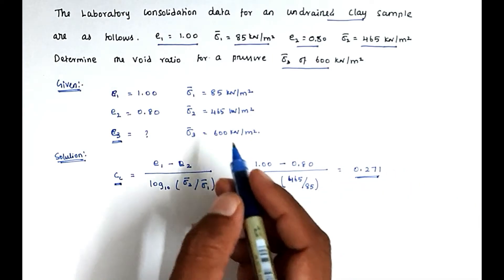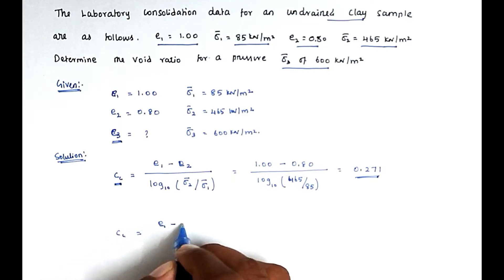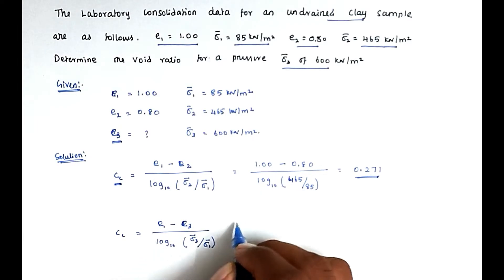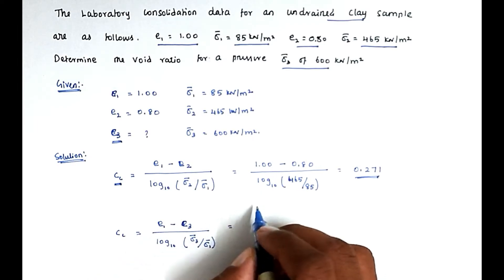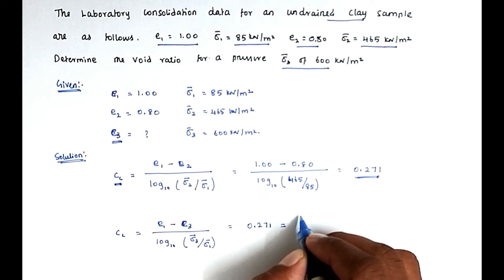Again we can substitute the value using the formula: cc equal to e1 minus e3 divided by log 10, sigma 3 bar divided by sigma 1 bar. We can substitute all the values. So cc value we know is 0.271, equal to e1 value is 1.00 we know.